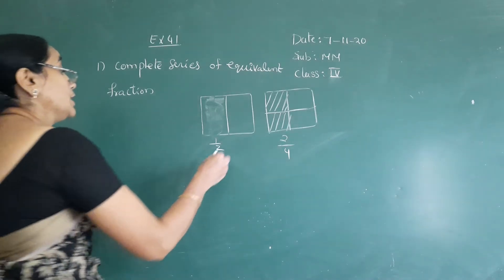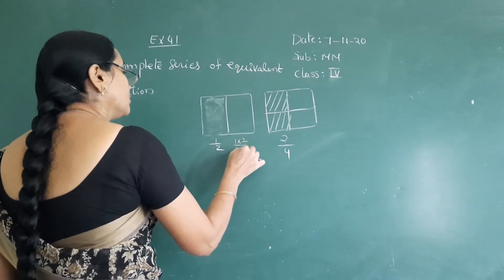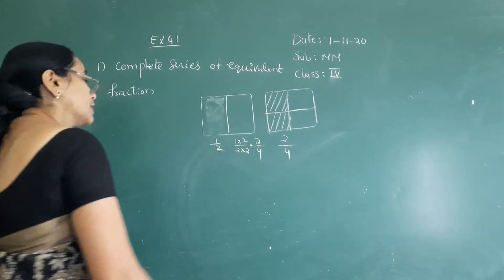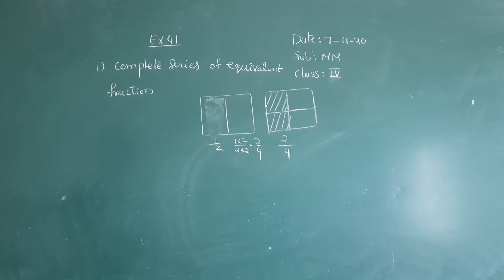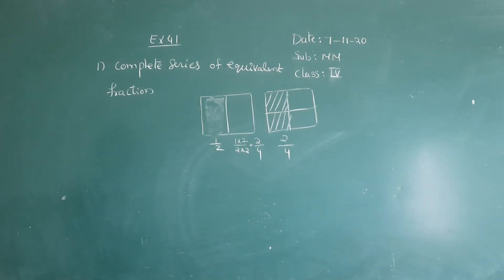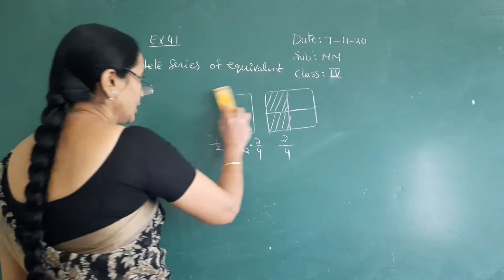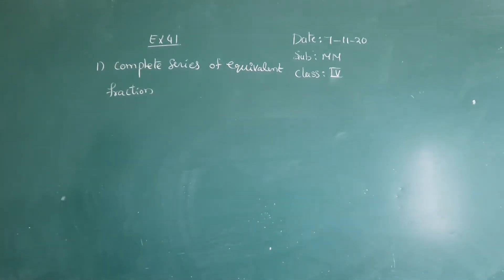How to get equivalent fractions? By multiplying the numerator and denominator by 2 to get 2 by 4. How to obtain equivalent fractions? By multiplying or dividing the same non-zero number with the numerator and denominator of the given fraction.